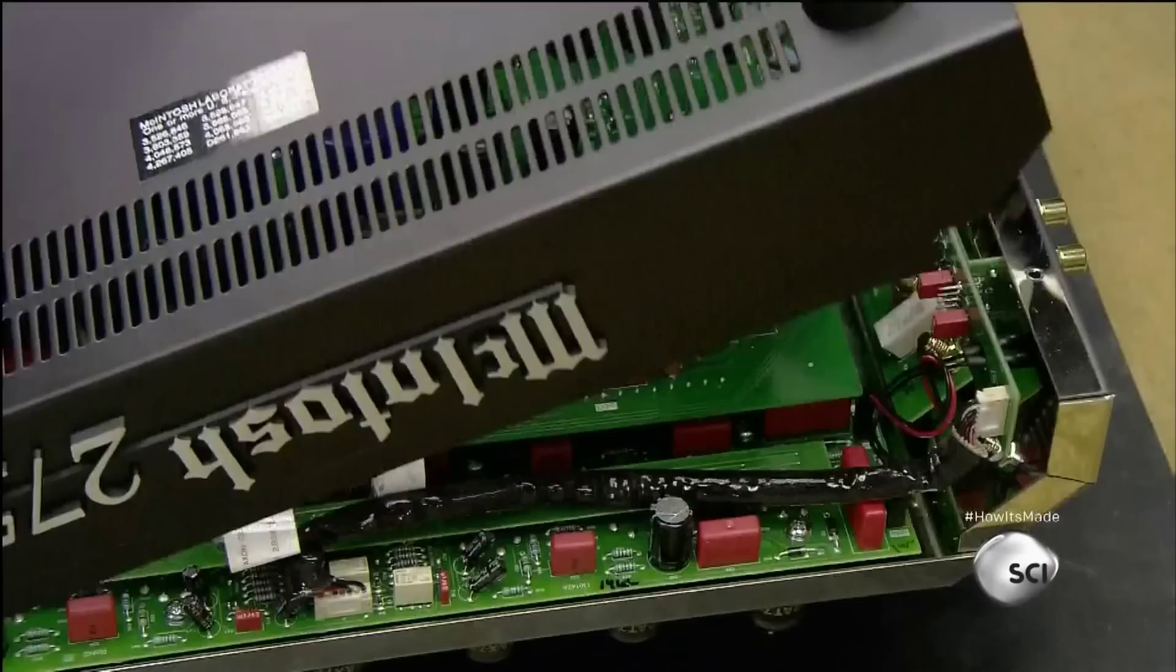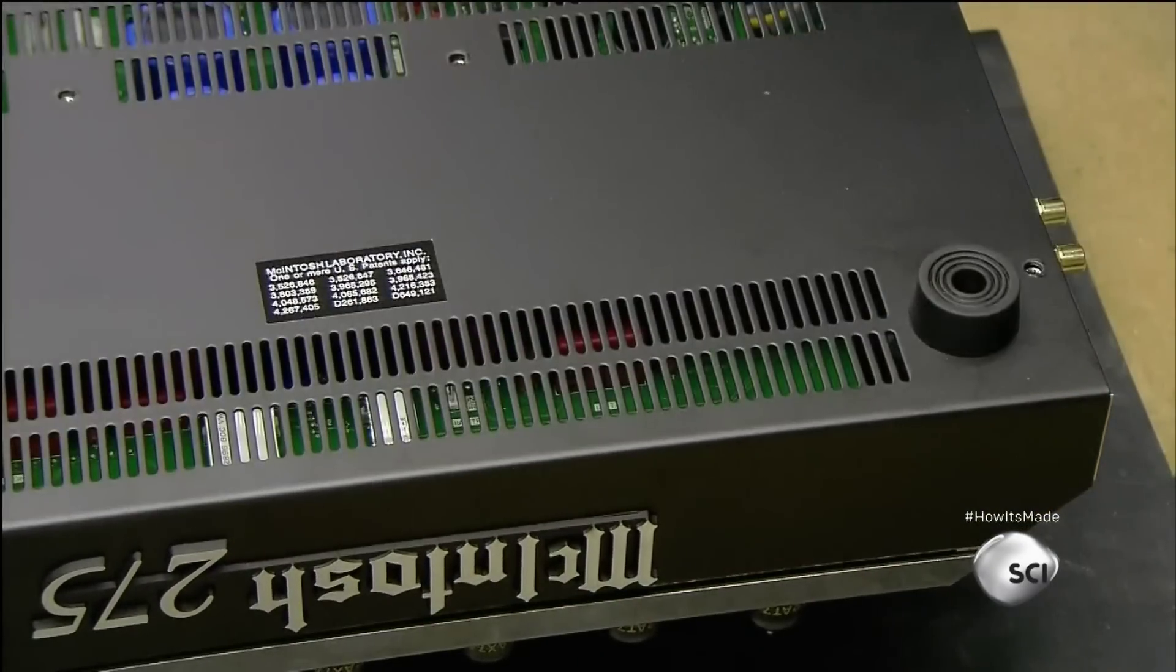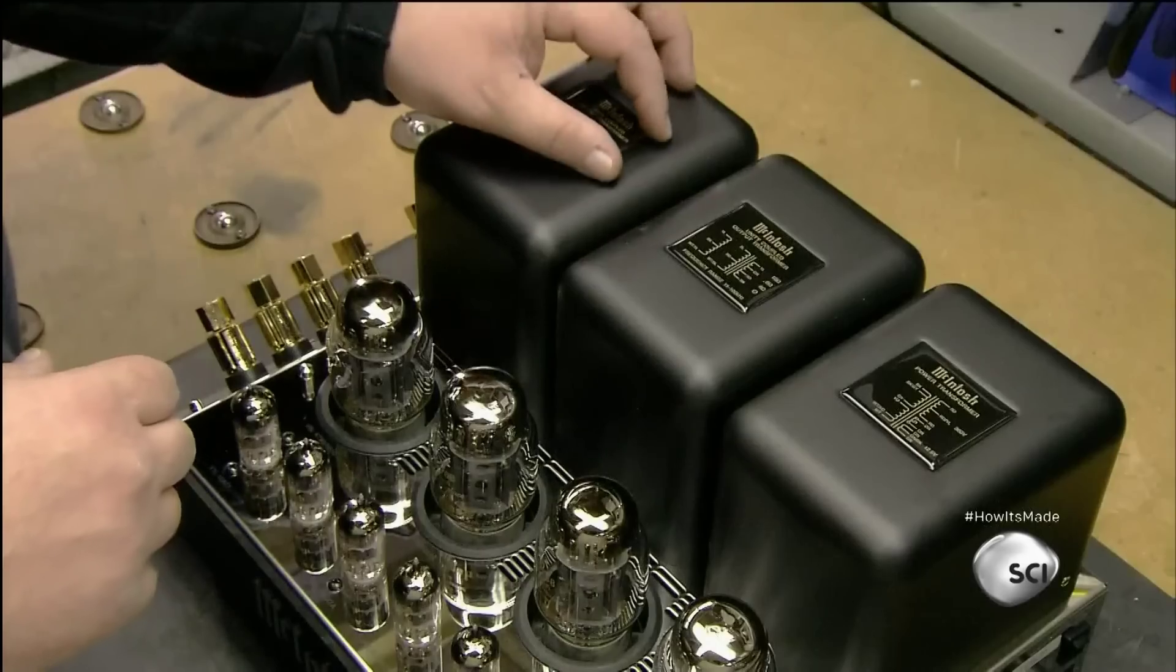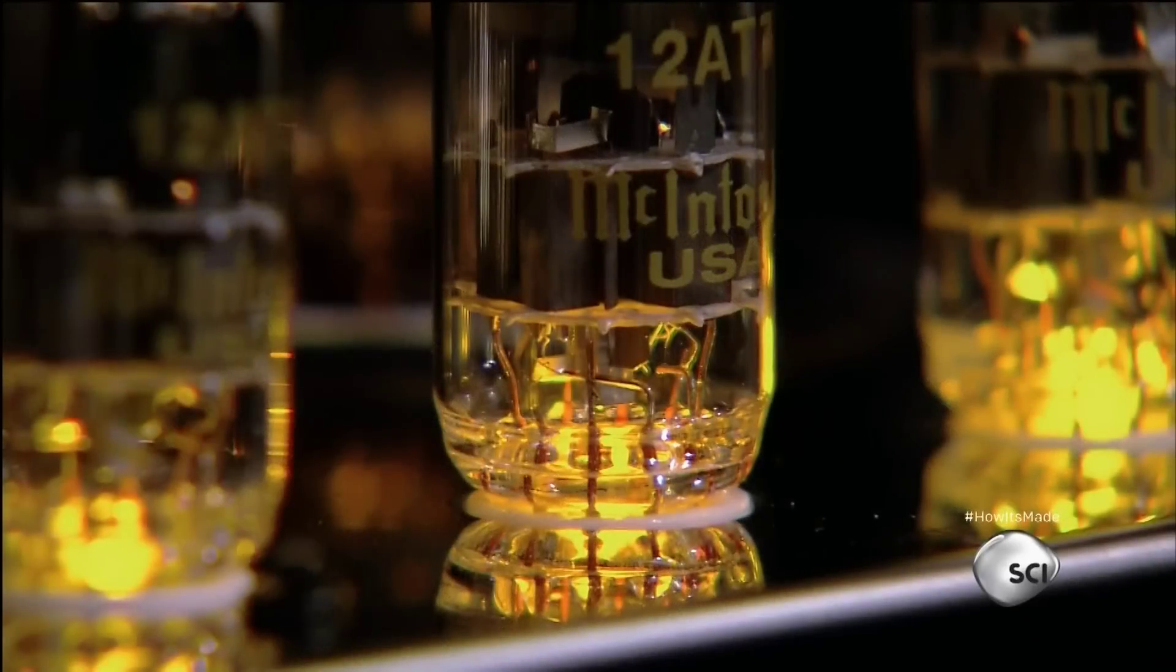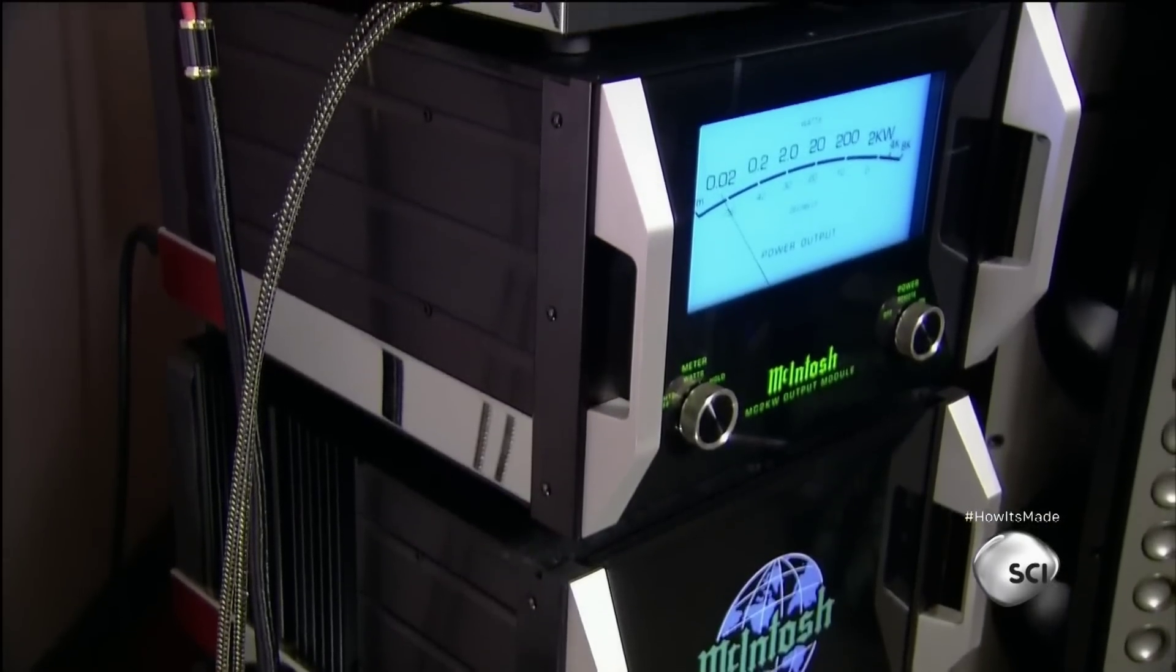Then they attach the chassis' ventilated bottom cover, made of painted steel. They affix decals to differentiate the output transformers from the power transformer. LED lights turn green when the amp is powered up and ready to deliver that warm, natural sound that many believe only traditional vacuum tubes can produce.